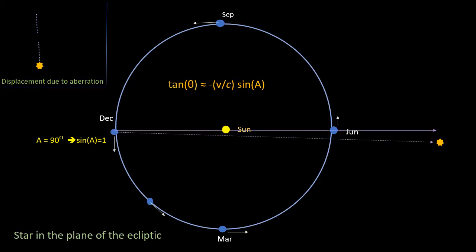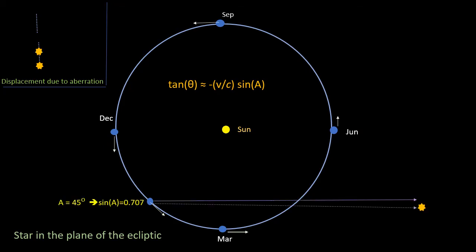So if we start in December, the Earth is moving at 90 degrees to the direction of the star. So the aberration is at its maximum, minus V over C. Let's go forward a bit to early February. The Earth is now moving at 45 degrees to the direction of the star. So the aberration is now smaller.